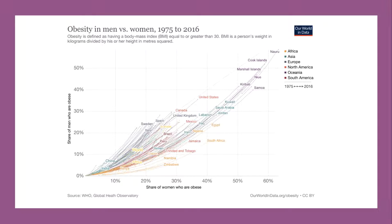Obesity is clearly a growing problem around the world. The latest estimates are that well over a quarter of a billion children are predicted to fall into the obese category — a body mass index of more than 30 — by 2030. That's probably an increase of 100 million within the space of a decade. You can see here the rise in obesity in both men and women as a percentage, drawing on data published by Max Roser and his team at Our World in Data, based in Oxford.